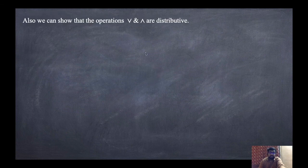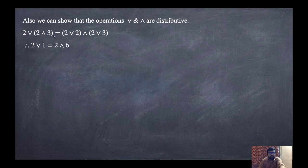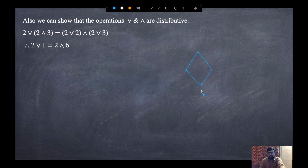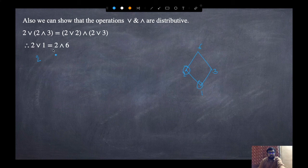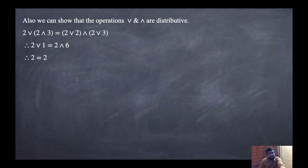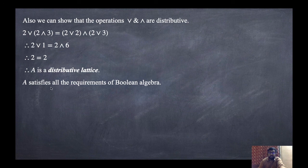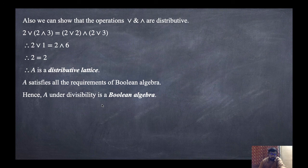To verify it is distributive, we check: 2 ∨ (2 ∧ 3). First, 2 ∧ 3 = GLB(2,3) = 1, then 2 ∨ 1 = LUB(2,1) = 2, so LHS = 2. For RHS: (2 ∨ 2) ∧ (2 ∨ 3) = 2 ∧ 6 = GLB(2,6) = 2. LHS equals RHS, so it is a distributive lattice. Since it is both complemented and distributive, {1,2,3,6} under divisibility is a Boolean algebra.